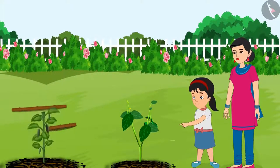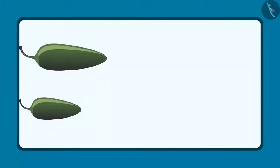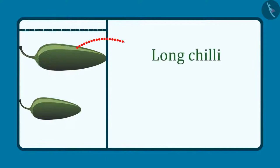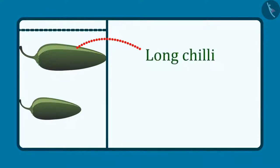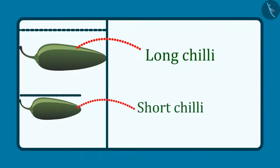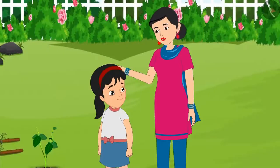Pinky says: Mummy, look at that chilli plant. Even in this, the length of both the chillies is different. Out of these two chillies, this chilli is long and this chilli is short. Right? Her mother replies: Yes Pinky, you understood correctly.